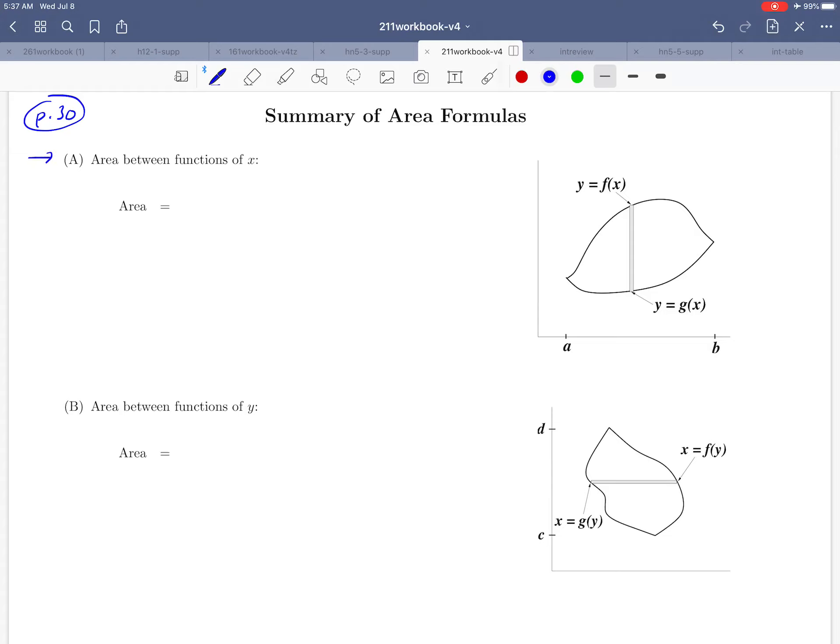So let's start with situation A here, area between functions of x. Here's the way that we would picture that. Suppose that you have two functions in the form y equals f of x and y equals g of x, one on the top and one on the bottom.